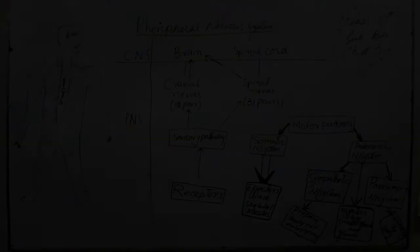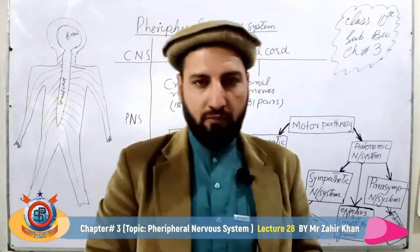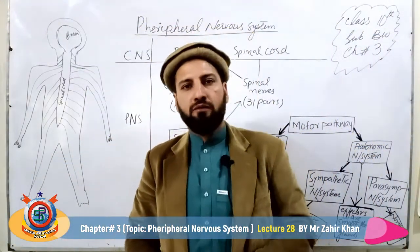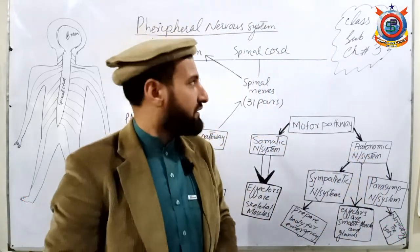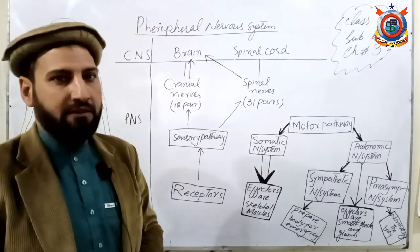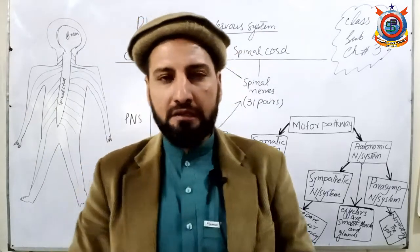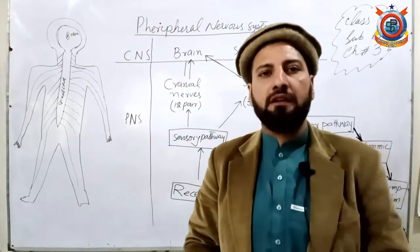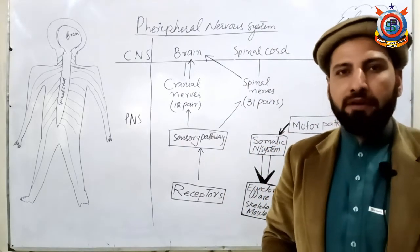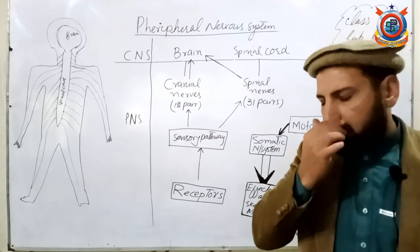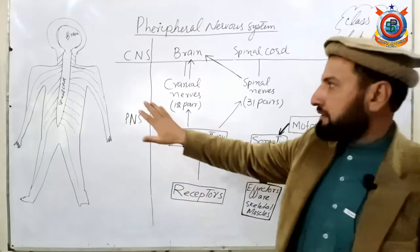Bismillahirrahmanirrahim. Assalamu alaikum and welcome back to the Oriental Public School online teaching platform. This is a Class 10 Biology lecture. We are in Chapter Number 3 today. Our topic is the Peripheral Nervous System. We have already covered the Central Nervous System, i.e., the brain and spinal cord. After brain and spinal cord, our next topic is the Peripheral Nervous System. Brain and spinal cord make up the Central Nervous System of your body.